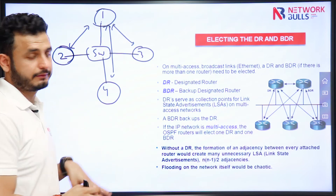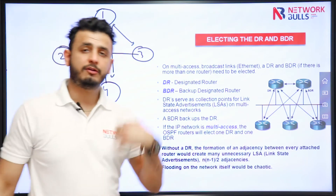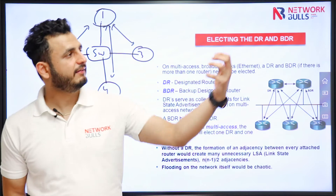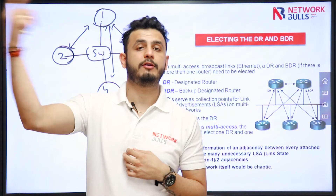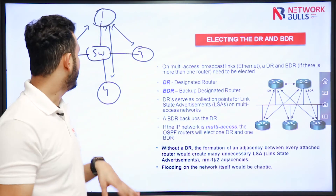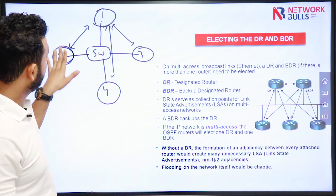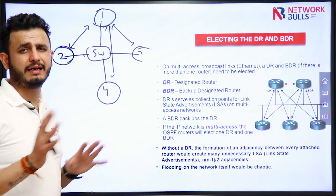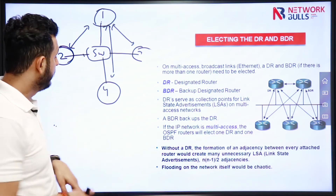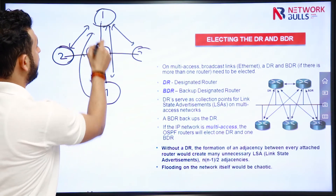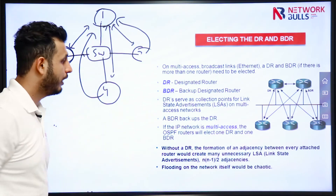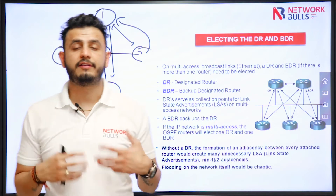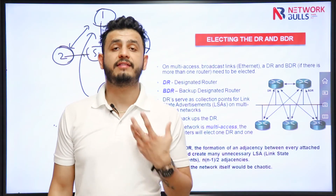If we talk about database exchange without DR, R2 will give its database to R1, R3, and R4. Whenever we receive any database from a neighbor, we advertise the same database to other neighbors. When R2 forwards its database to R1, the switch broadcasts it to R3 and R4 as well since OSPF uses multicast traffic and switches broadcast multicast. R4 and R3 will then send that database back to R1, causing flooding chaos in the network. To overcome this problem, we have the concept of DR and BDR.